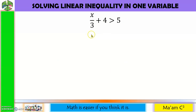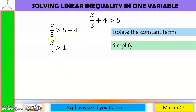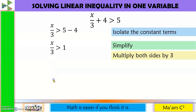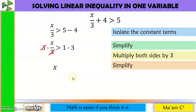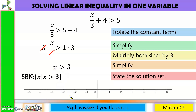Another example involving a fraction. First isolate the constant terms by moving 4 to the other side: it becomes minus 4, giving X/3 > 1. To eliminate the denominator, apply the multiplication property of inequality and multiply both sides by 3. 3 and 3 cancel, giving X > 3. Set builder notation: the set of all X such that X is greater than 3. On the graph, 3 is excluded (empty circle), with the inequality pointing right. Interval notation: (3, +∞).